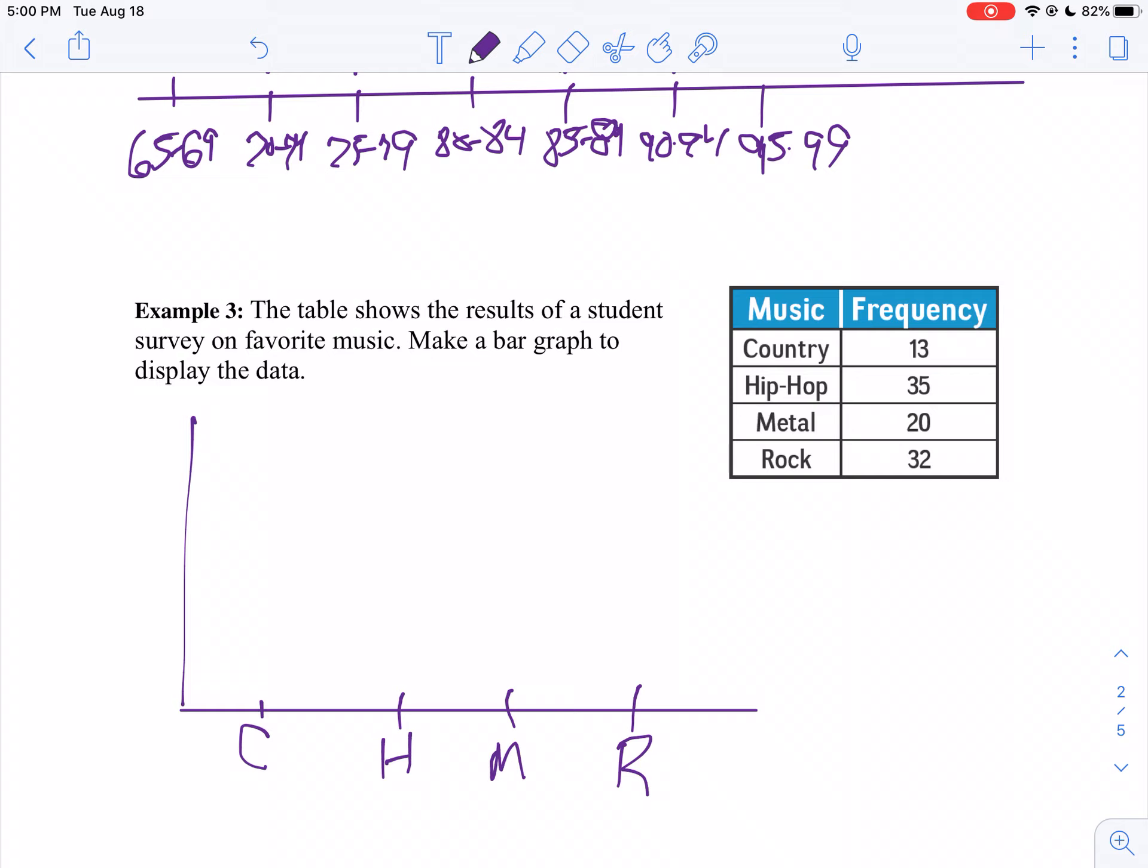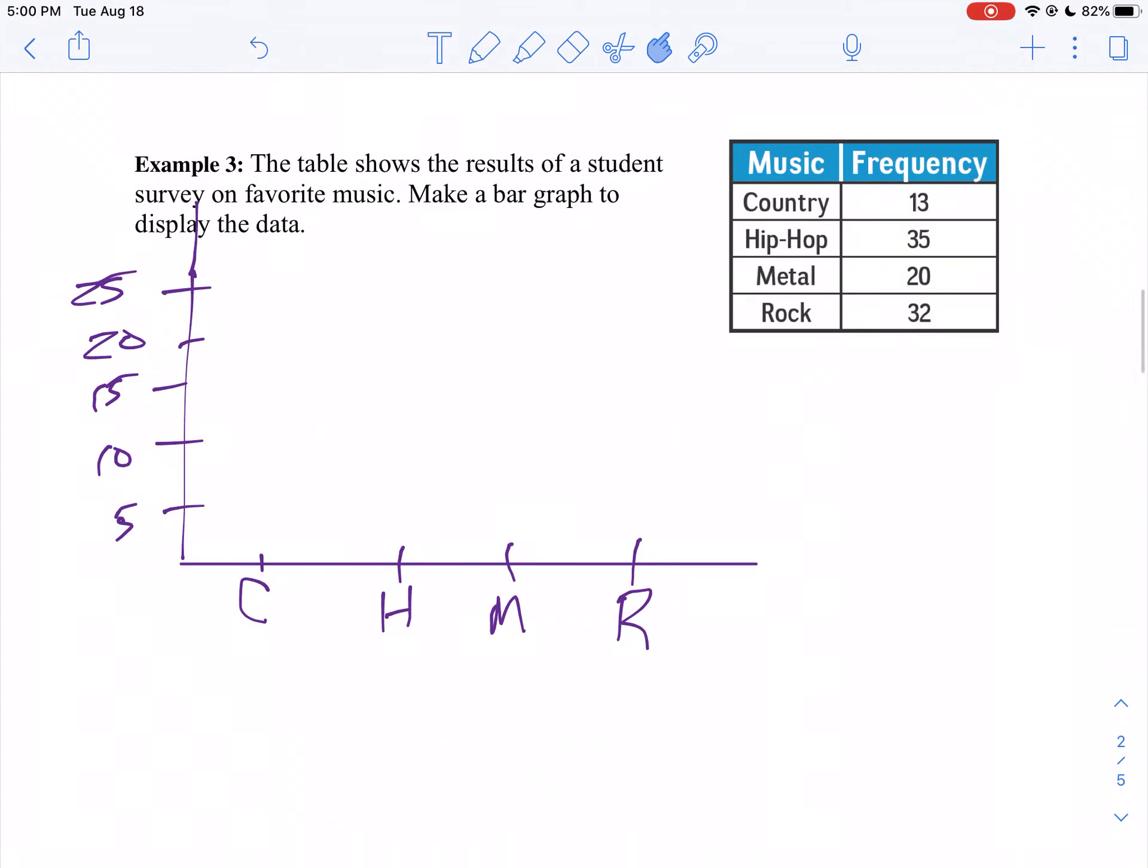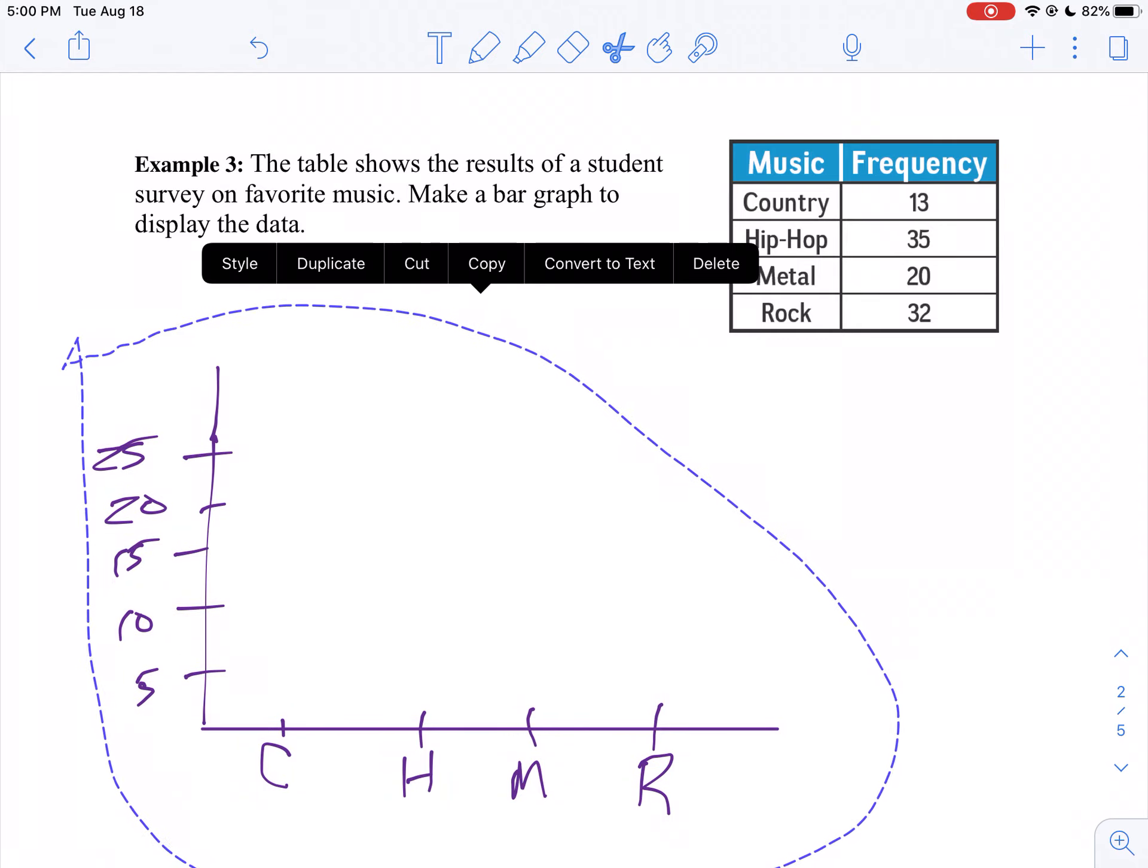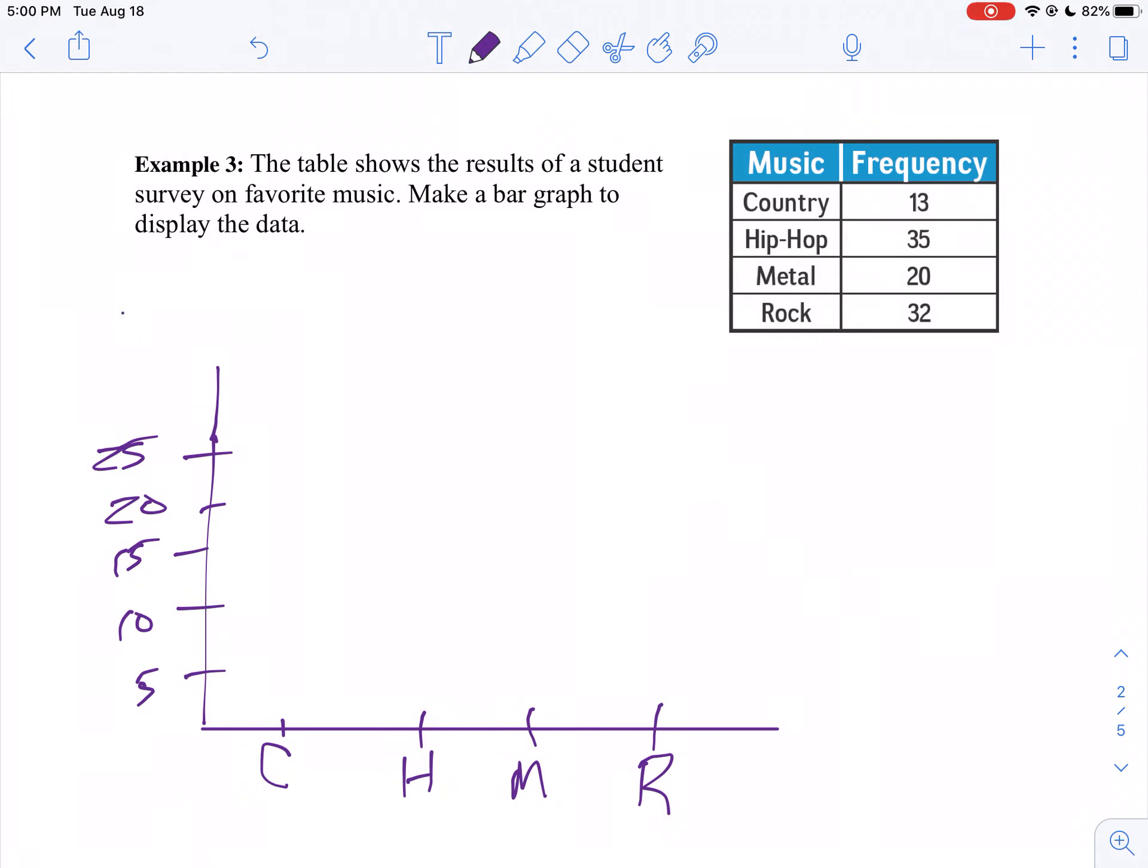So I think I'll count by fives. 5, 10, 15, 20, 25. Kind of running out of room here, which I didn't really need to. Let me see if I can adjust this so we can see the whole graph. Pull that down so we can see it then. So 25, 30, and 35.